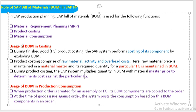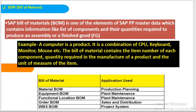BOM is also helpful in production consumption. When a production order is created for an assembly or FG, BOM components are assigned to the order. At the time of goods issuance against the order, the system posts consumption based on the BOM components in the order. At creation of production orders, the system picks the quantity from the BOM and posts consumption accordingly.